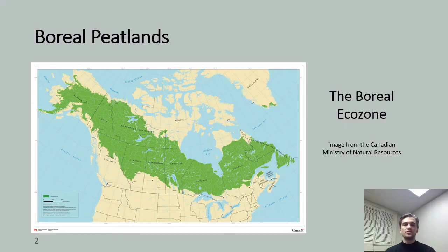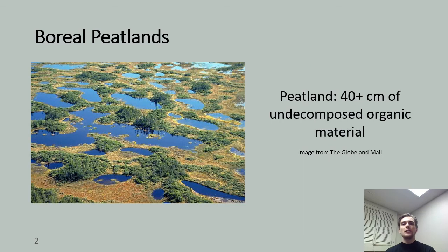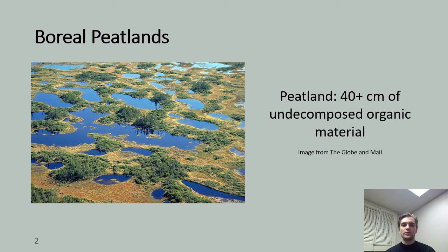The boreal ecozone spans across most of northern Canada as shown on the map on this slide. Boreal peatlands are a unique ecosystem found in this ecozone. Peatlands are defined by the accumulation of undecomposed organic material in excess of 40 centimeters. Boreal peatlands are unique because despite covering only 3% of the Earth's land area, they are responsible for more than one-third of the carbon sequestered in soil globally.